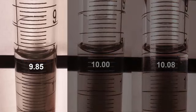In the first example, the meniscus is below eye level and the apparent volume is 9.85. Notice how you can see the entire encircling ring from the 10.00 milliliter mark.